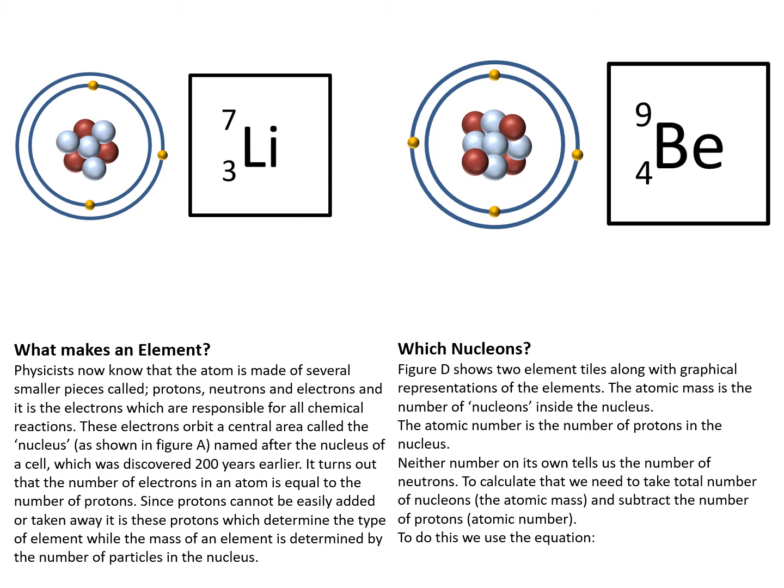The atomic number is the number of protons in the nucleus. Neither number on its own tells us the number of neutrons. To calculate that, we need to take the total number of nucleons, that's the atomic mass, and subtract the number of protons, which is the atomic number.